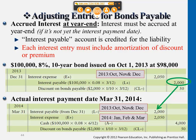We're basically just reversing that interest payable — reducing it because now, when it comes to the pay date, we're actually paying it by cash for six months. And since we accounted for three months of discount on bonds payable at last year end, we only have an additional three months of discount on bonds payable to consider.